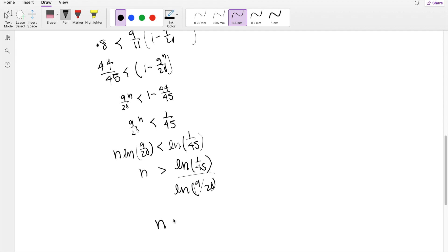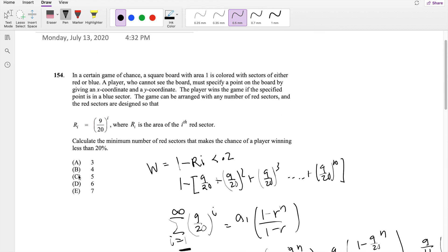You get that N has to be greater than 4.767, which means N has to be 5. Our answer is C.